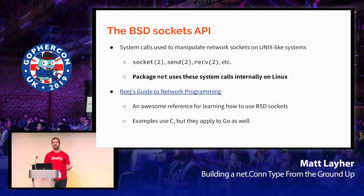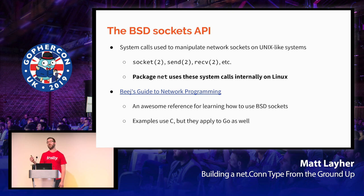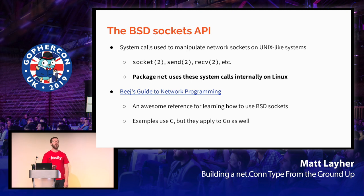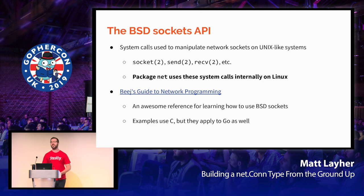To implement this in Go, we need to discuss the BSD sockets API — a set of system calls used to manipulate network sockets on Unix-like operating systems such as Linux. Common ones include socket, send, and receive. The '2' indicates you can find them in section two of the manual pages. Package Net uses these system calls internally. I highly recommend Beej's Guide to Network Programming — it's a great guide to learning BSD sockets, and although the examples are in C, they apply very well to Go because we have the syscall and x/sys packages which also enable raw access to these system calls.